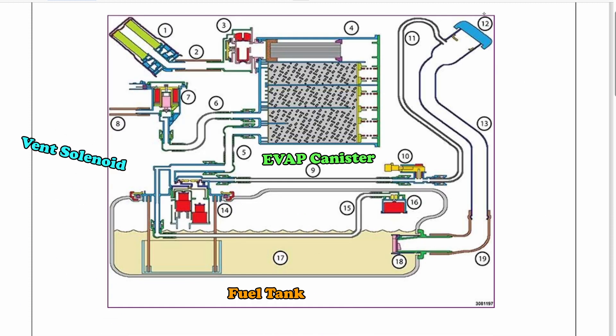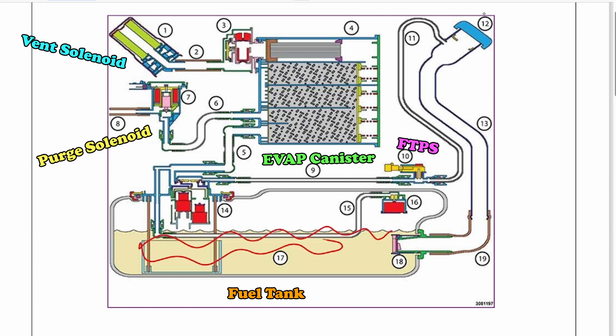So I got one more schematic. This schematic is from a Dodge workshop manual. Again, we have the fuel tank. Lots of fuel, lots of vapor. That gets drawn into our vapor lines into the charcoal canister. A lot of vapor being collected. By the time that vapor reaches the end, it's allowed to go out our vent into the atmosphere as fresh air.